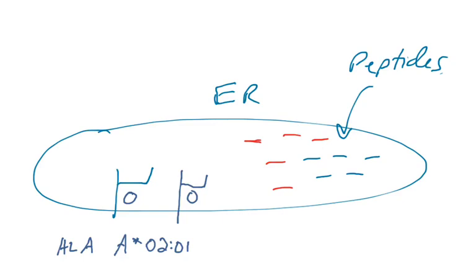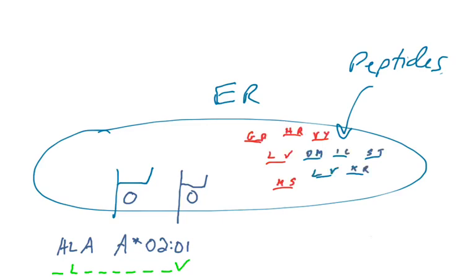This is the MHC class 1 molecule. This allotype loads peptides that have a certain peptide binding motif — it only binds peptides with a leucine at position 2 and a valine at position 9. So if you look at all these peptides in the ER, will all of them load onto this MHC or HLA allotype?